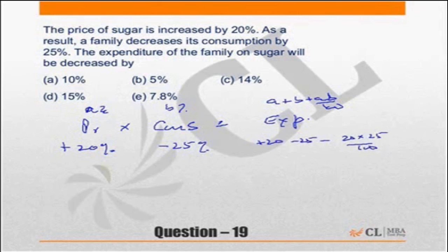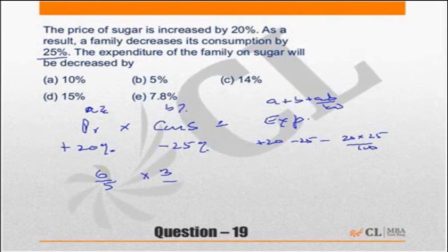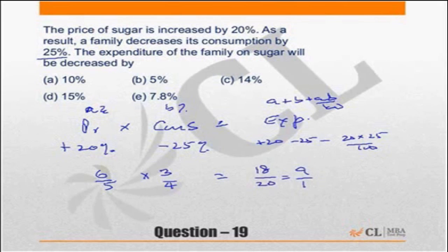You can solve this question by ratio as well. Price has gone up by 20 percent, so price has become 6 by 5 times. Consumption has decreased by 25 percent, so consumption has become 3 by 4 times. So expenditure should become 18 by 20 times.